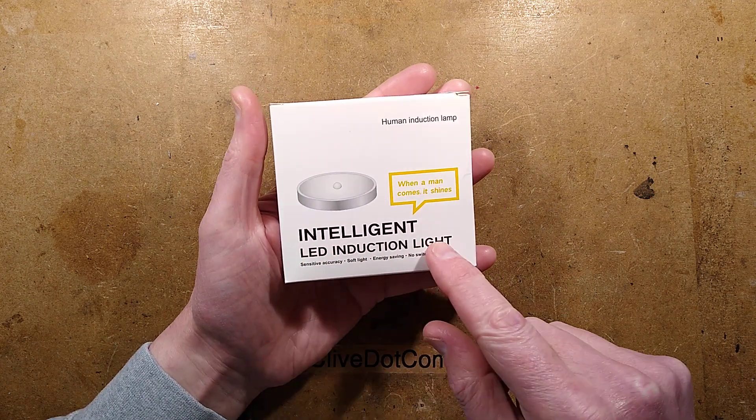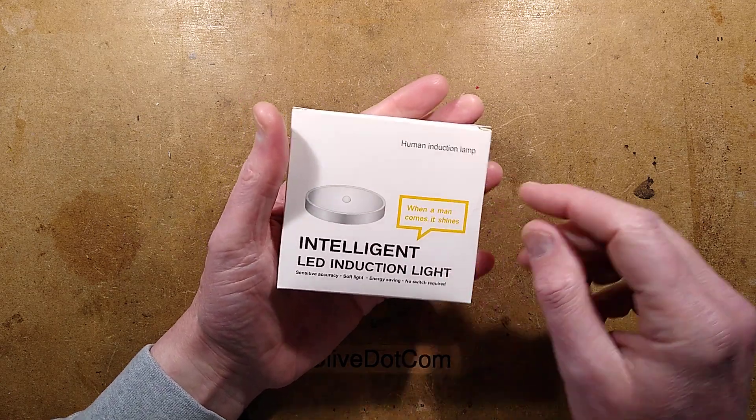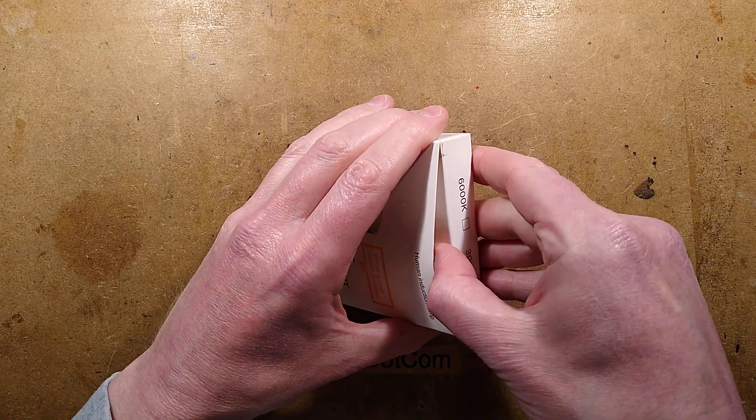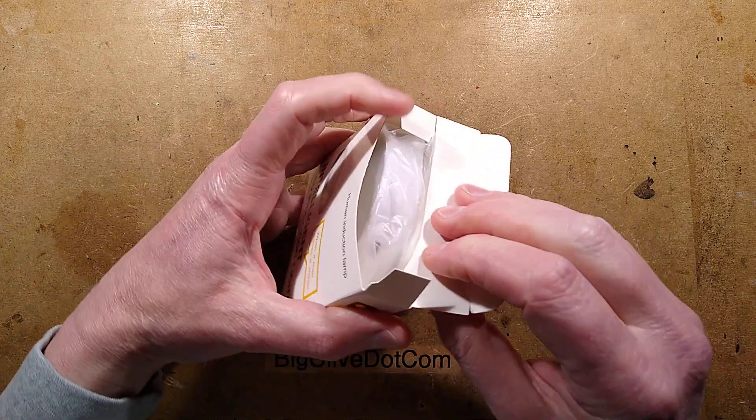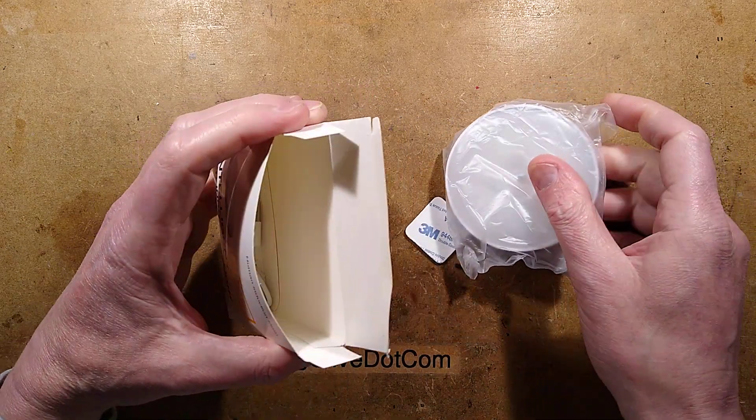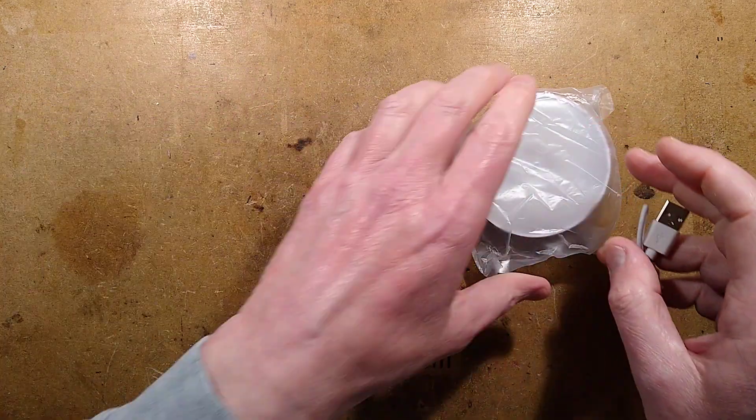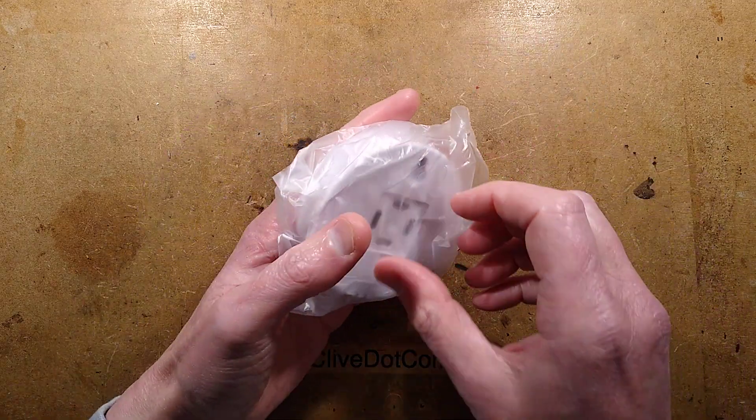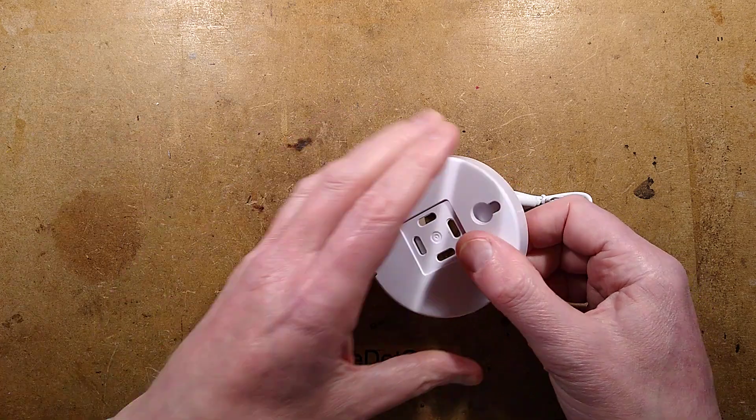An intelligent LED induction light - when a man comes it shines. Induction in Chinese is a translation of detection. So if it's a proximity detector they'll call it an induction detector. I wonder if that comes from the inductive pickups used in some factory equipment.